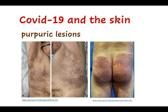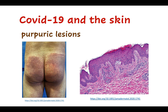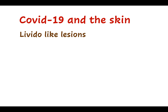Purpuric lesions have been reported in COVID-19. Histology disclosed superficial perivascular lymphocytic infiltrate with erythrocyte extravasation and focal papillary edema. The epidermis showed focal parakeratosis and dyskeratotic cells. The changes are not specific and are similar to those seen in pigmented purpuric dermatosis. There were no signs of thrombotic vasculopathy. There are only a few cases published in the literature, so limited further information is available about purpuric lesions in COVID-19 patients.